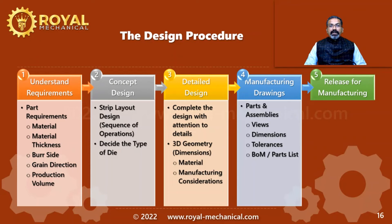Step 4 is to create the manufacturing drawings for the parts, sub-assemblies, and assemblies of the press tool. The manufacturing drawing consists of the views, dimensions, tolerances, and the bill of material. The bill of material is nothing but a list of parts the press tool is made of.